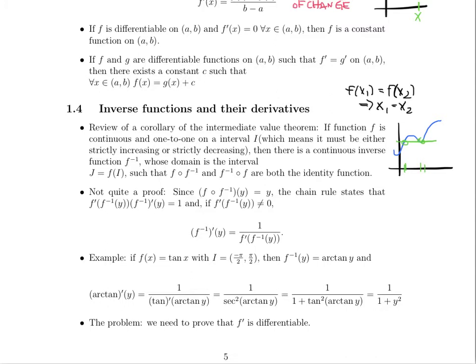So, we have a function that is continuous and one to one on an interval, then there is a continuous inverse function, f inverse, whose domain is the interval J, which is whatever happens to the interval when f acts on it. Other things that should not surprise you: if we take f and compose it with its inverse, or we take f inverse and compose it with f, we get the identity function either way.